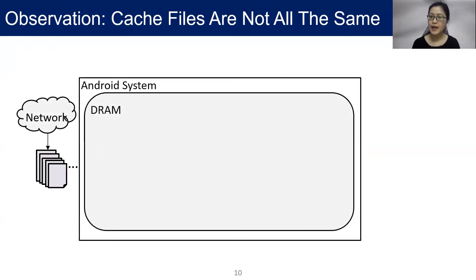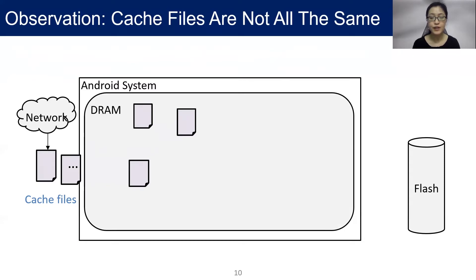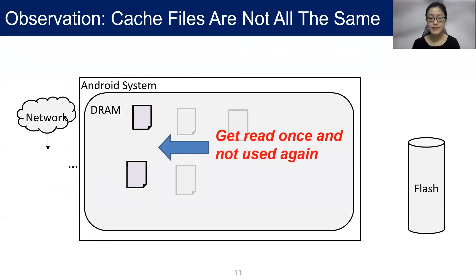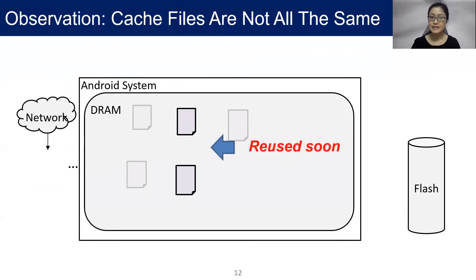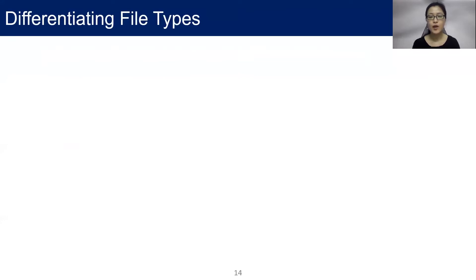The cache data downloaded from networks — Android systems will first cache them in DRAM and then write them to flash storage. These are called cache files. We find that cache files are not all the same. Specifically, they have different reuse behaviors. Some of them are just read once and not used again. Some of them will be reused many times in a short period of time. Others could be reused after a long time. Thus, we categorize cache files into three types and handle them differently.